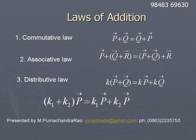Similarly, if there are two constants k1 and k2, numerical constants, then (k1 plus k2) into p̄ is equal to k1 p̄ plus k2 p̄. So, these laws are obeyed by vector addition.